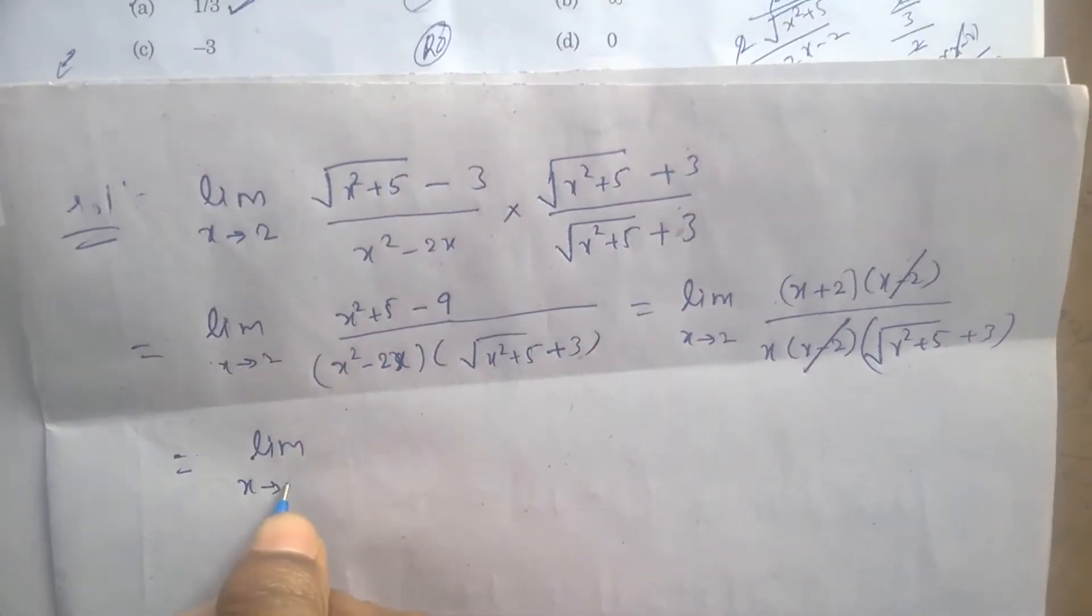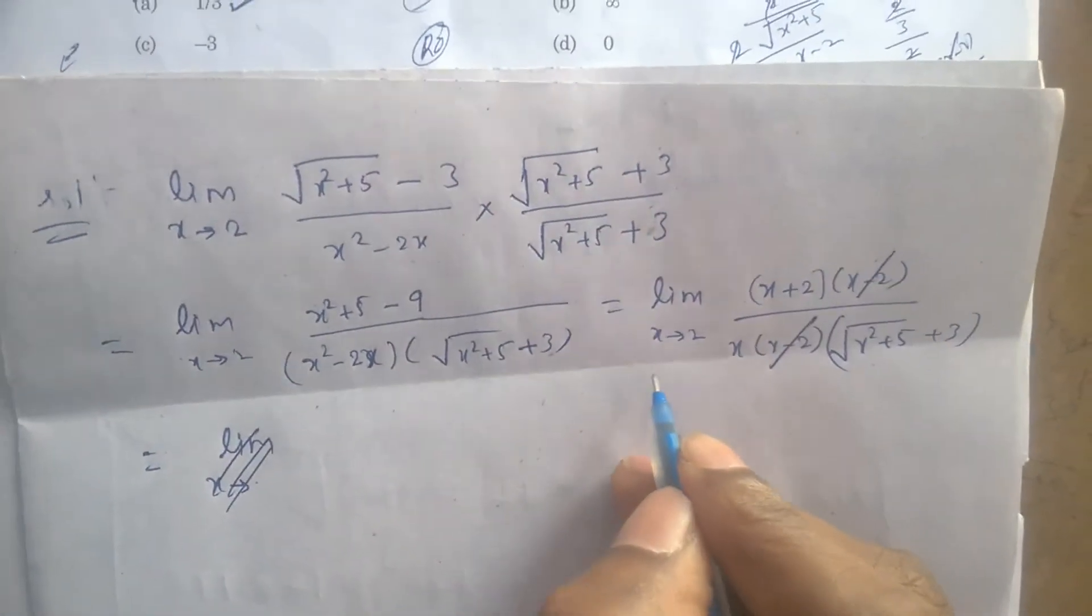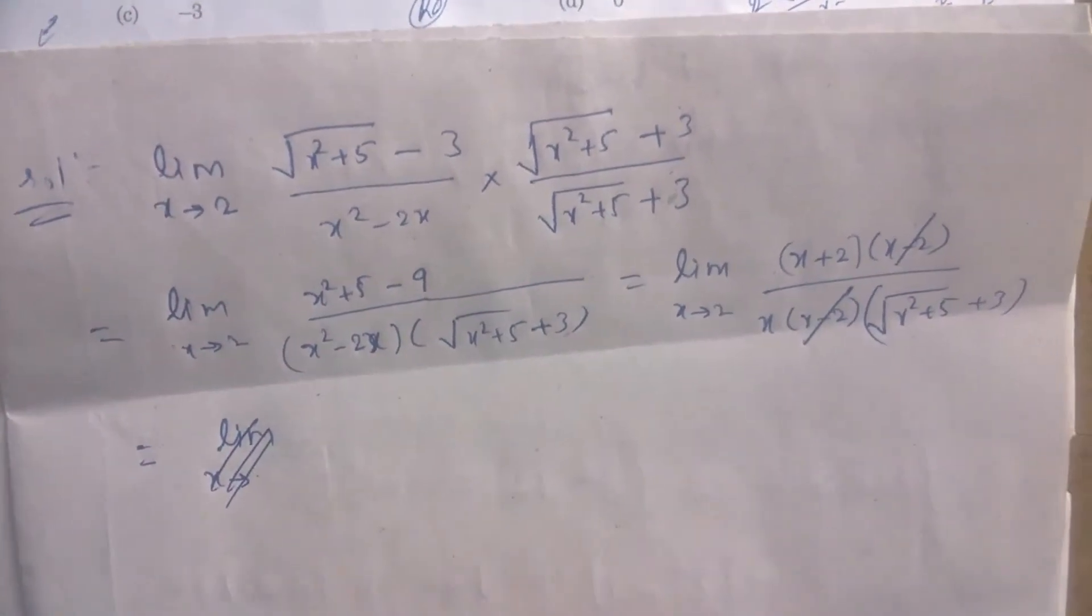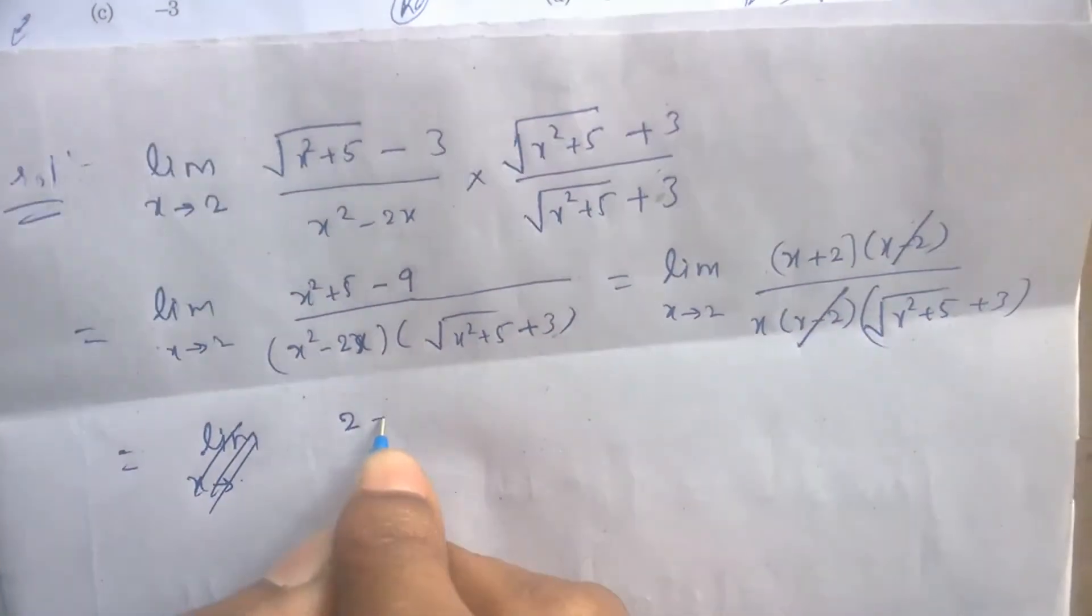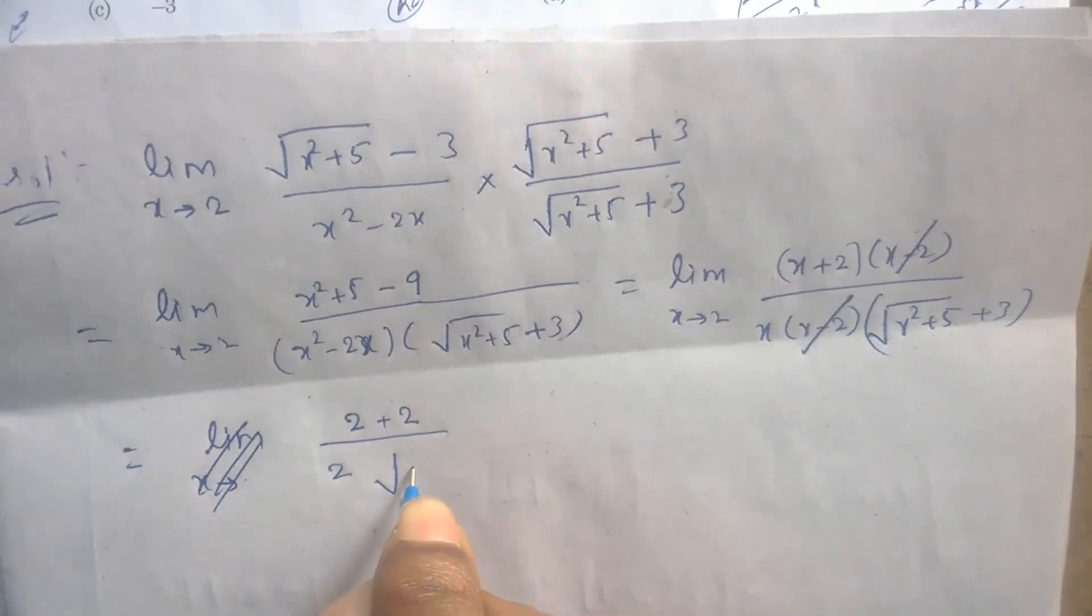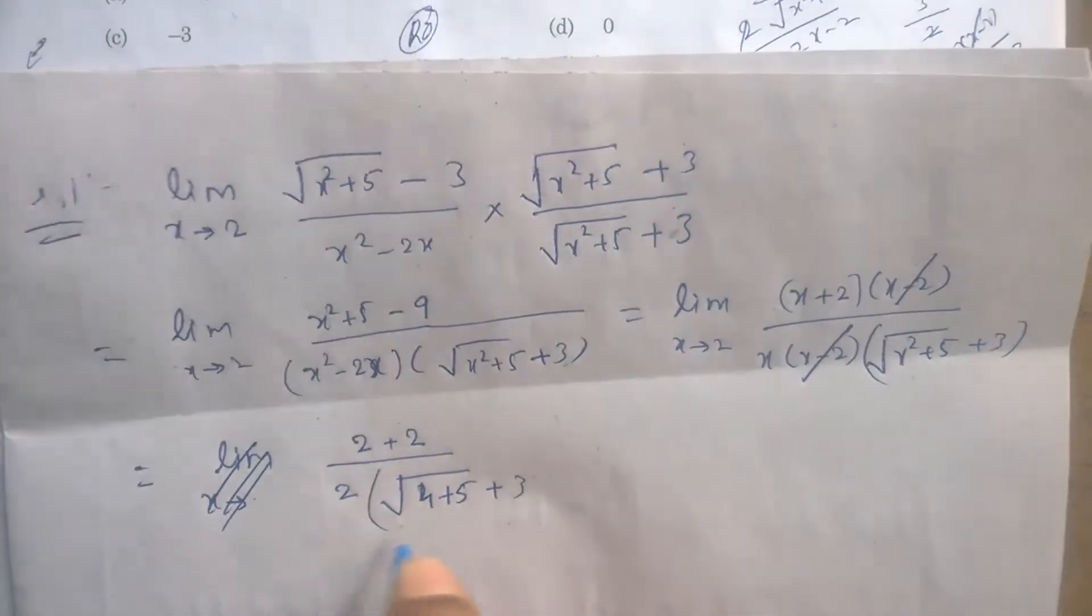Limit x tends to 2: now you can eliminate the limit by substituting the value of x equals 2 in every expression. It becomes (2+2) by 2 into √(2²+5) + 3, which is √(4+5) + 3.